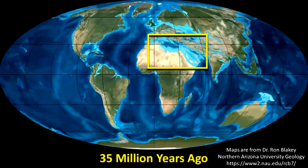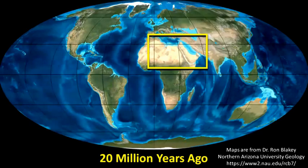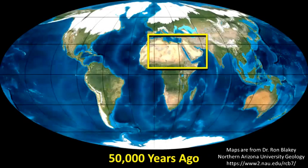At 35 million years ago, North Africa is now mostly desert. The Arabian Peninsula and what would become Iraq, Syria, and much of the Middle East is still underwater or barely above water. The northeast corner of the yellow box — which will become Iran and Turkey — is already very rugged. By 20 million years ago, we start to see the separation of the Arabian Peninsula breaking off from North Africa, with the Red Sea forming between them, until we get to today.